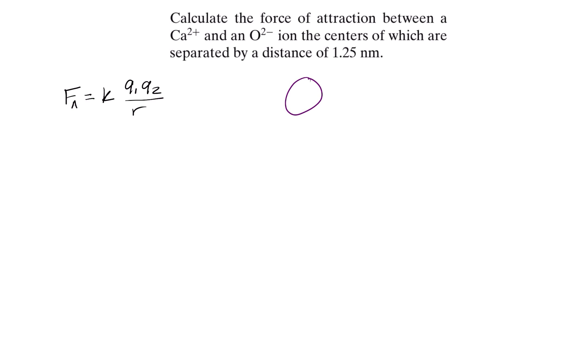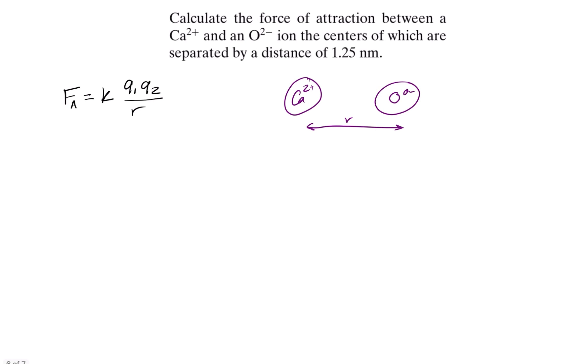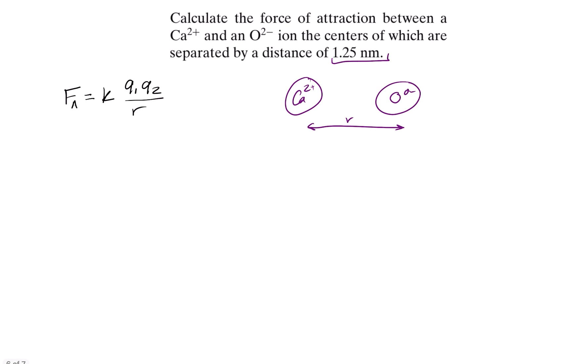And this is assuming that we have our two atoms here. We've got Ca, O, and then we've got this distance of r, which is our interatomic separation. This is going to be given in nanometers in this case. We've got 1.25 nanometers, but we'll have to keep an eye on the units.